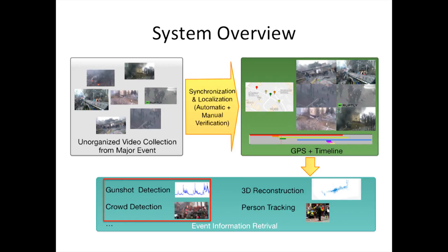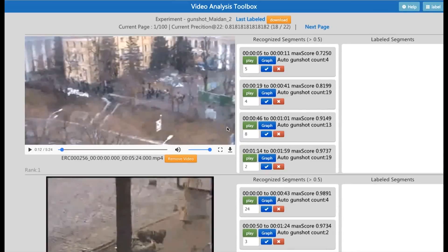After videos are organized, our system provides powerful tools for event information retrieval, including gunshot detection, crowd detection, 3D reconstruction, and person tracking. First we demonstrate gunshot and crowd detection. Our system ranks videos with the most gunshots from highest to lowest, and detects which segment within the videos contains gunshots.